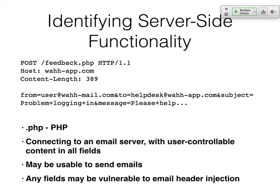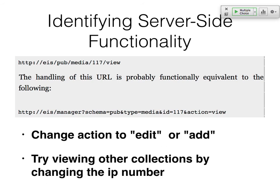Here's a feedback form posting that's obviously sending an email to a helpdesk. If the helpdesk address is being sent up as a parameter, maybe you can send it somewhere else through their server — that could enable sending spam from their server or lying about the from address. The data is in the body of a POST request, not the headers. There's an action parameter set to 'view' — maybe that action could be 'edit' or 'add.' And there's an ID number of 117, which strongly suggests they're just counting up, so try other numbers to see what happens.